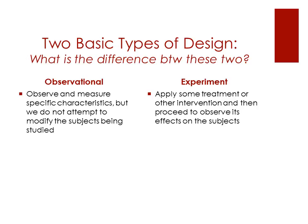In experimental, we're applying some treatment or other intervention, and then we proceed to observe or measure its effects on the subjects. So in an experiment, we're purposely engaging in some type of effort of intervention or change. In observation, we're simply observing what is occurring naturally.